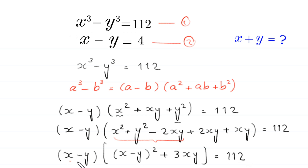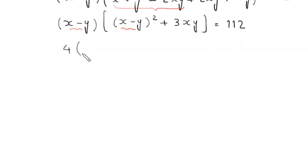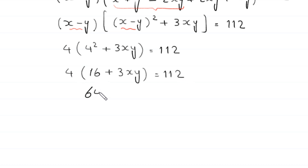Now we replace x minus y with the value 4 from equation 2. This becomes 4 times 4 squared plus 3 times xy equals 112. So 4 times 16 plus 4 times 3xy equals 112, which gives 64 plus 12xy equals 112.